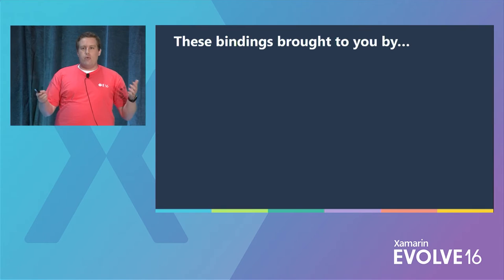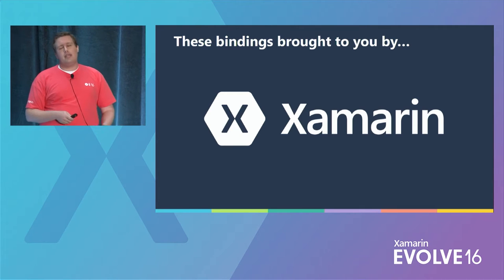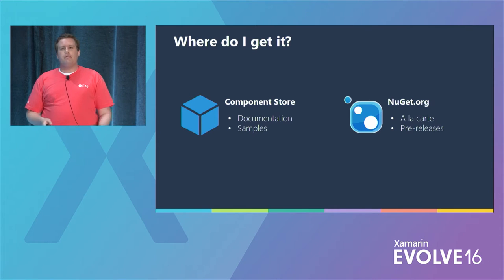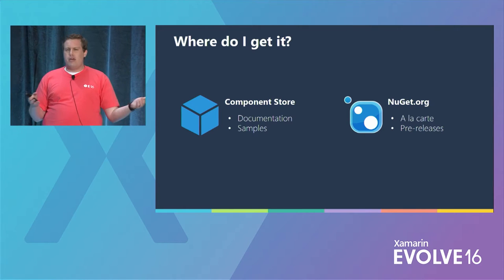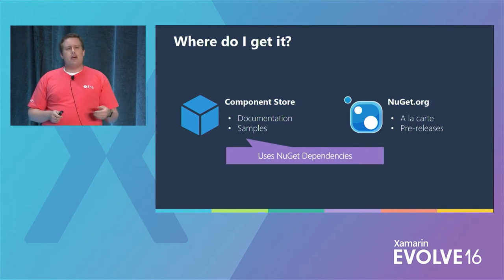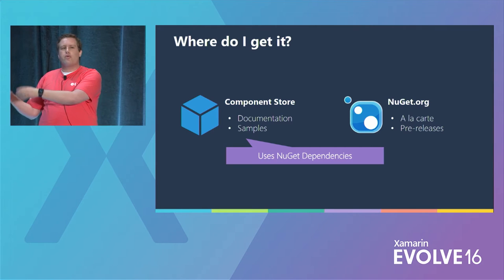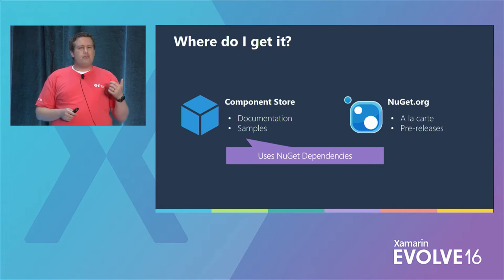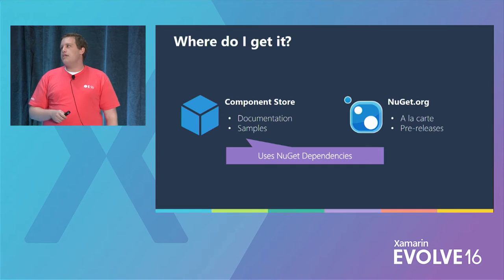It wouldn't be a set of bindings unless they were brought to you by Xamarin. We maintain and own these bindings. You can get them on the Component Store or on NuGet. The Component Store is actually dependent on the NuGets. So if you already know what APIs you're going to use, go to NuGet — it's a great place for binary package management. But if you don't know what you want yet and need documentation, getting started guides, or samples, the Component Store is a great place for that.